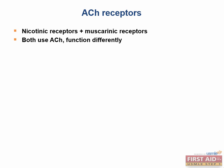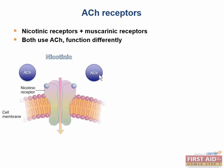Thinking back to our roadmap, there were two major types of acetylcholine receptors: the nicotinic and the muscarinic receptors. Both of these receptors use acetylcholine as the neurotransmitter to mediate some sort of effect. Let's go ahead and start off with our nicotinic receptors.